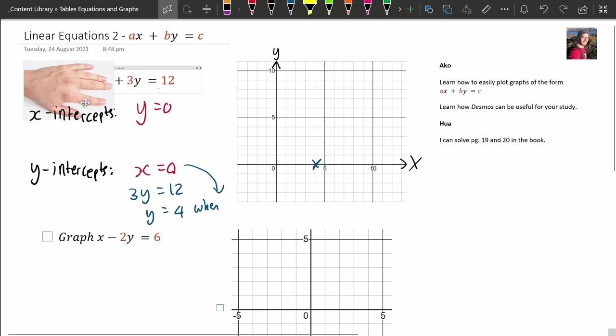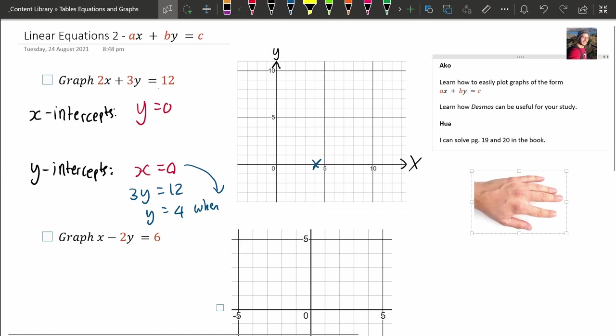Now the X intercept is very similar. So that's when Y is 0. So put your hand and cover that 3Y for me, please. And it should look like that. So 2X equals 12.